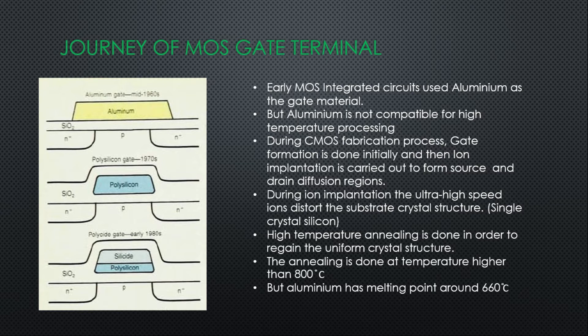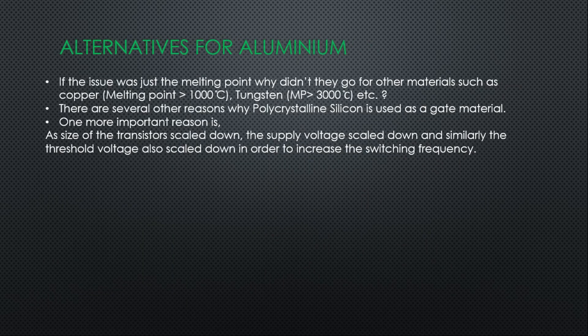After ion implantation, high temperature annealing is necessary to regain the uniform crystal structure of the single crystal silicon. Annealing is done at temperatures higher than 800 degrees Celsius. It is a process of rapidly heating the wafer and allowing it to cool very slowly so that ions reach their lattice points and form a uniform crystal structure. But the problem is that aluminum has a melting point of around 660 degrees Celsius, so aluminum would definitely melt during this annealing process.